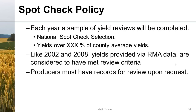Producers must have records available for review upon request — and it will be the owner who is asked. It's important that the owner either continues to have access to the producer's records or already has them retained. We can come as late as 2018 and ask the owner for the evidence. Relationships between operators and tenants change — tenants have their farm tenancy terminated, they retire, or become deceased. We will be asking the owner for the records, not the operator who was on the farm when the yield was certified.